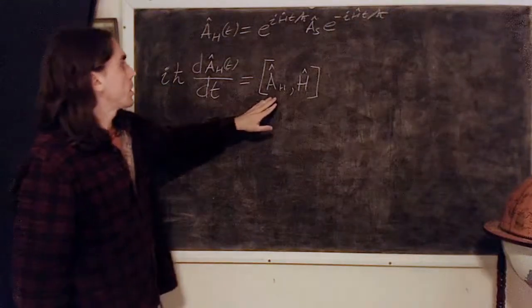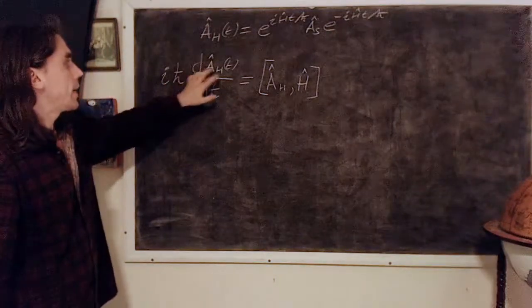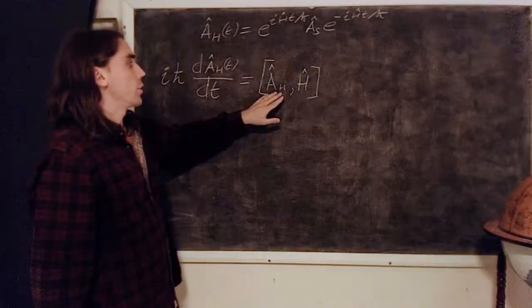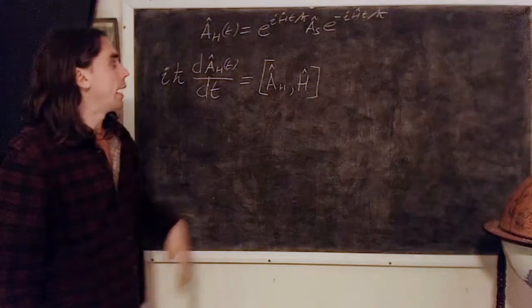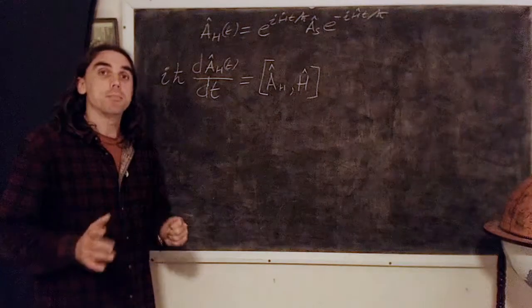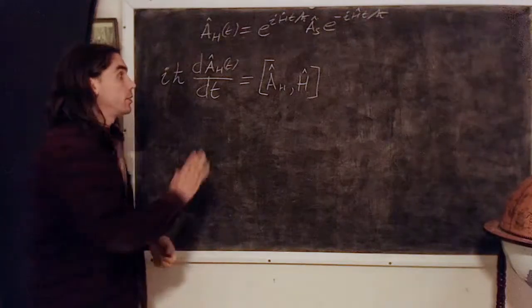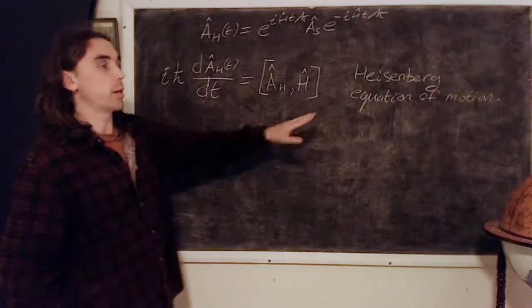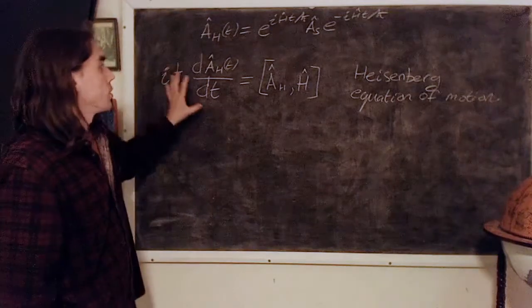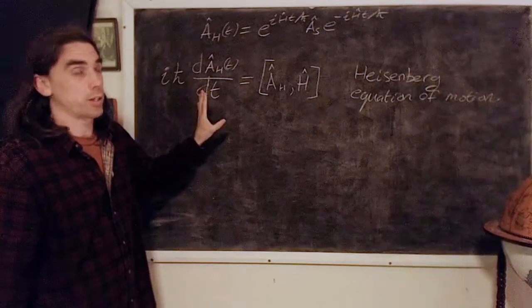So we've just got iℏ dA/dt is equal to the commutator of A and H. This fulfills the role in the Heisenberg picture of the Schrödinger equation, and we call this the Heisenberg equation of motion, fulfilling the role of the time dependent Schrödinger equation.